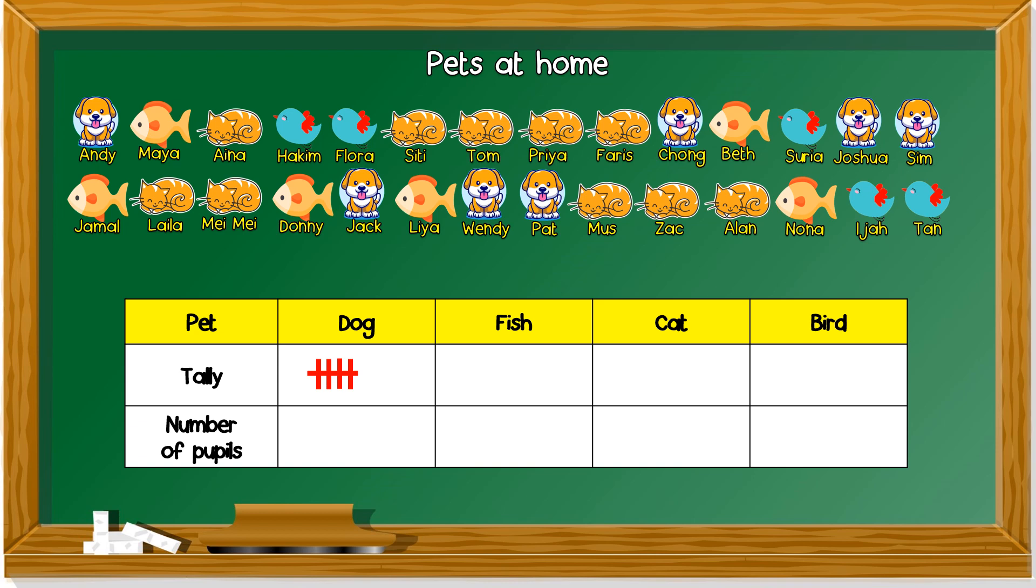Satu hingga empat menurun. Yang kelima, kamu potong keempat-empat supaya nampak tahu yang ini mewakili lima. We continue, six, seven. So, how many pupils have dog? Seven.